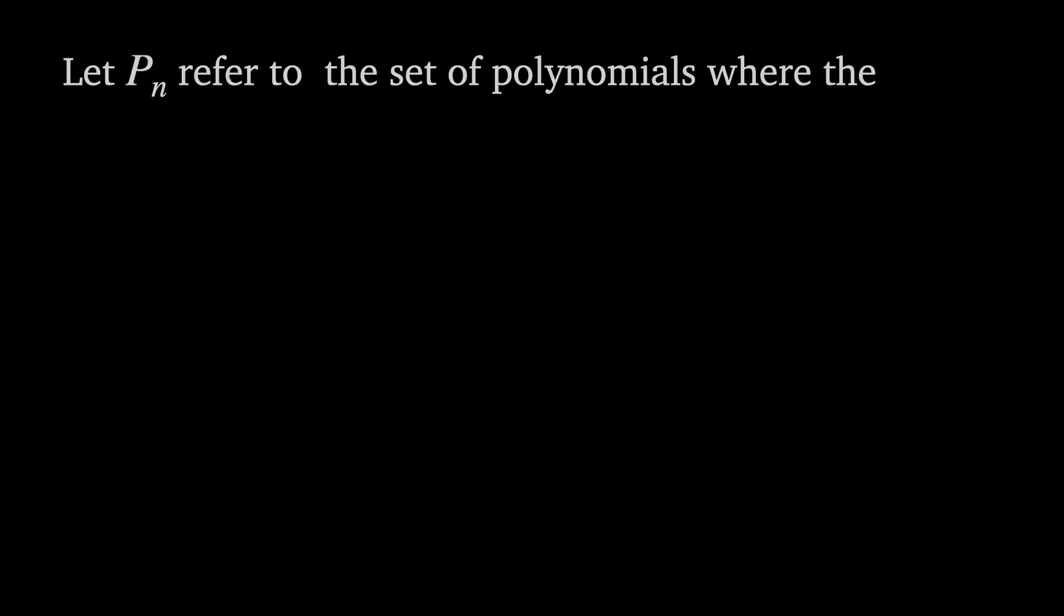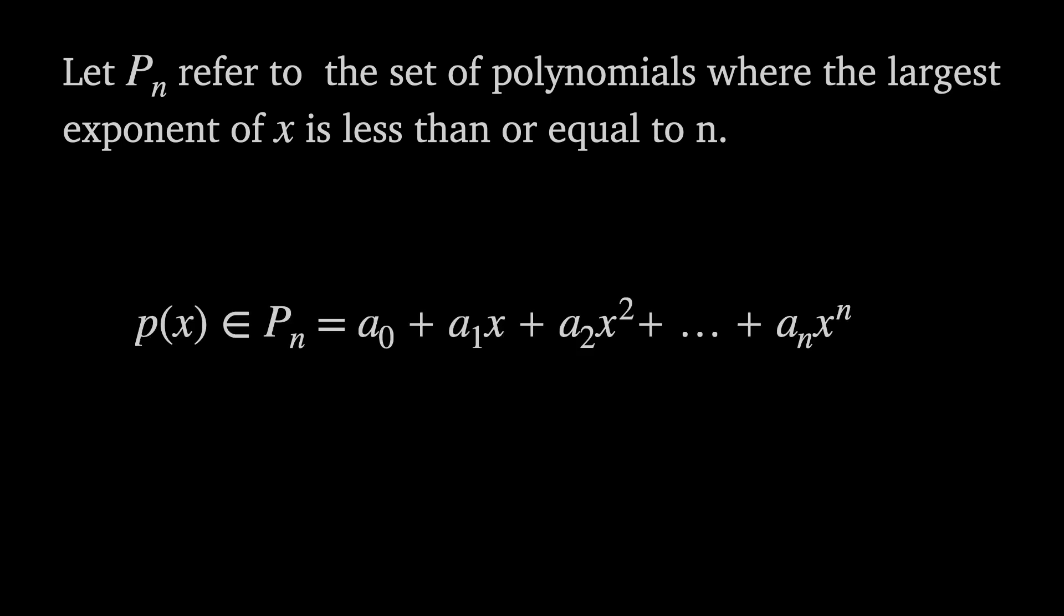Let p sub n refer to a set of polynomials where the largest exponent of x is less than or equal to n. That is, p of x in p sub n takes the form a0 plus a1x all the way to an x to the n. And for our purposes any a sub i could be equal to 0, though I understand that in some areas this definition might be different.